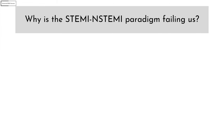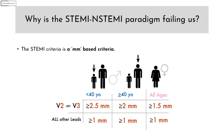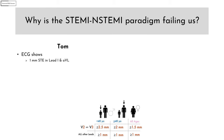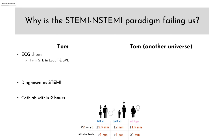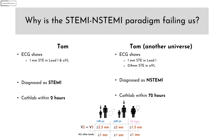Why is the STEMI-NSTEMI paradigm failing? It has fundamental flaws. The STEMI criteria is a millimeter-based criteria — how can anything in biology be arbitrarily defined in millimeters? Suppose Tom comes to the ED with chest pain and his ECG shows 1mm ST elevation in lead I and aVL — he gets diagnosed as STEMI and taken to the cath lab within 2 hours. But if his ECG is taken a few minutes earlier and shows only 0.9mm in aVL, he gets diagnosed as NSTEMI and taken to the cath lab sometime within the next 3 days.